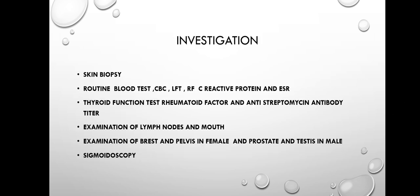Investigations include: skin biopsy; routine blood tests — CBC, LFT, renal function, C-reactive protein, and ESR; thyroid function tests including rheumatoid factor and anti-streptolysin O antibody titer; examination of lymph nodes and mouth; examination of breast and pelvis in females, and prostate and testes in males; and finally, sigmoidoscopy.